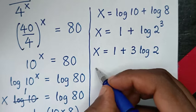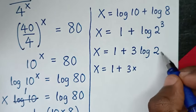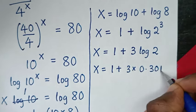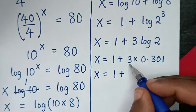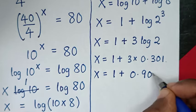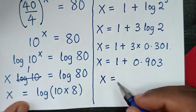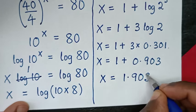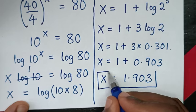Then in the next step, it will be x is equal to 1 plus 3 times log of 2. The value of log of 2 is 0.301, so it will be x is equal to 1 plus 3 times 0.301, which gives 1.903. So this is the final answer for the value of x in this problem.